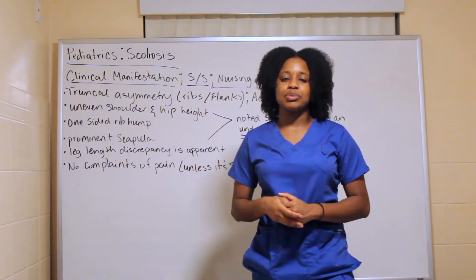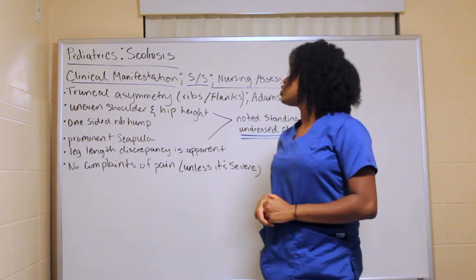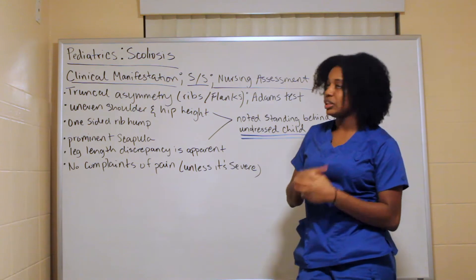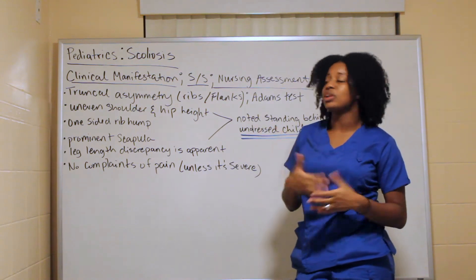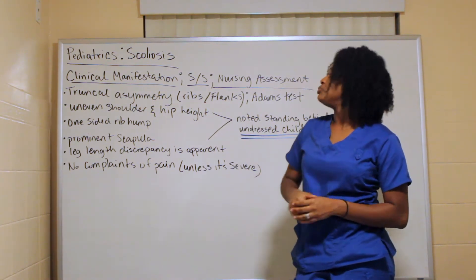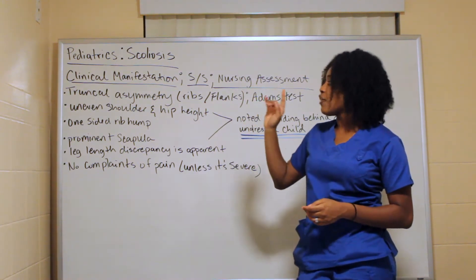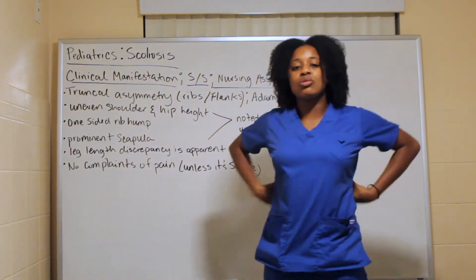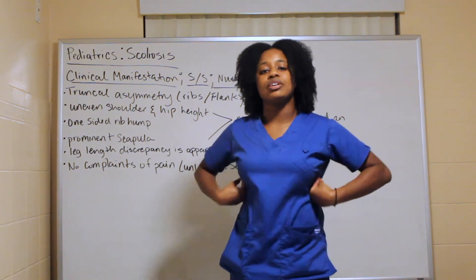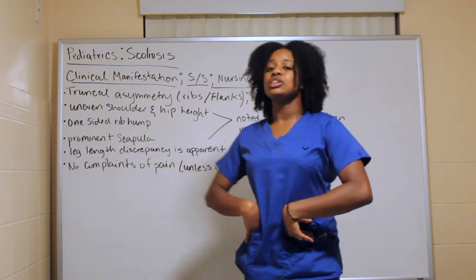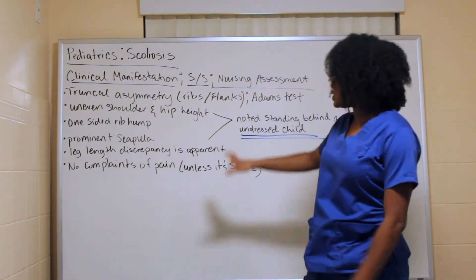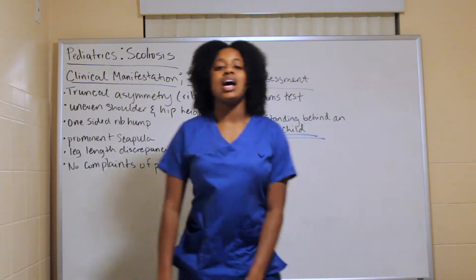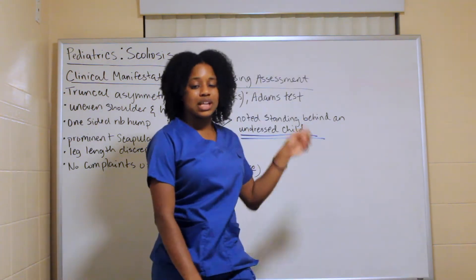Our clinical manifestations, also known as signs and symptoms, make up our nursing assessment. On a child with scoliosis, you're going to see truncal asymmetry — the truncal area consisting of the ribs and flanks. The test used to confirm this is the Adams test.